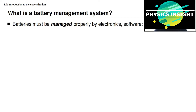Batteries need to be managed properly by a battery management system that comprises specialized electronics and specialized software that are co-designed in order to accomplish a number of very important goals. First, the battery management system needs to make sure that it protects the human users of the application that is being powered by the battery.